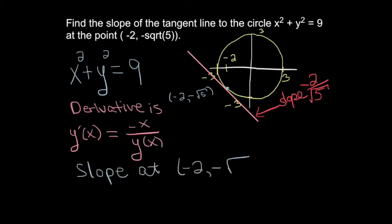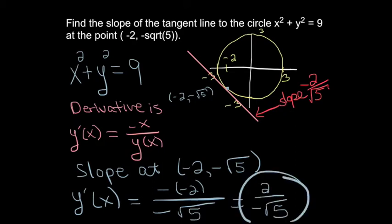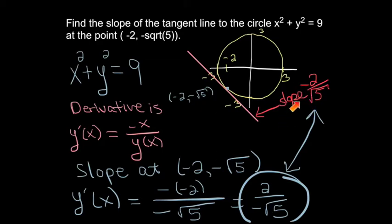To find the slope at negative 2, negative square root of 5, plug in x equals negative 2 and y equals negative square root of 5. The slope is 2 over negative square root of 5 — the same answer we got with explicit differentiation. Both the implicit and explicit methods agree: the slope is negative 2 over square root of 5.